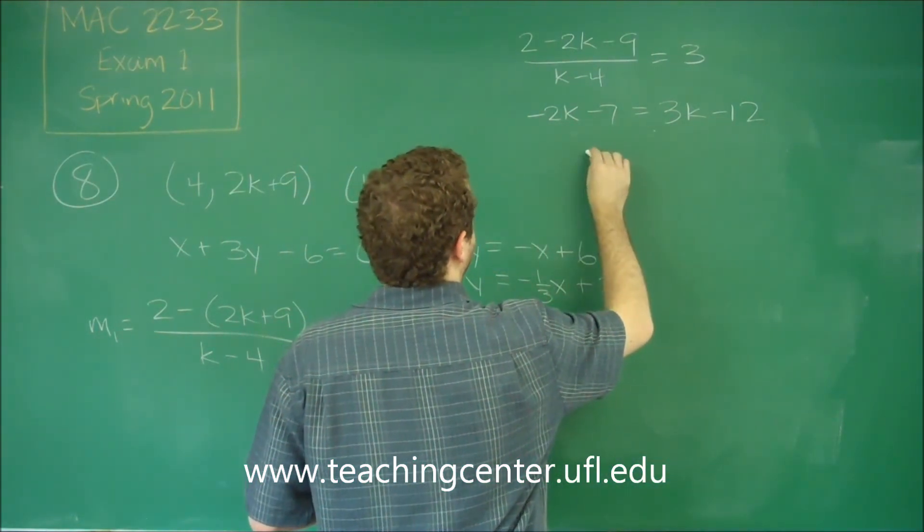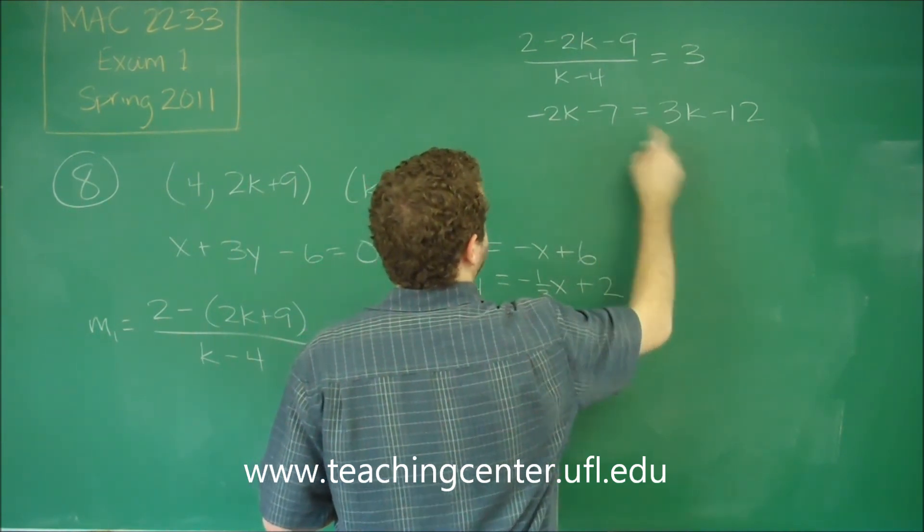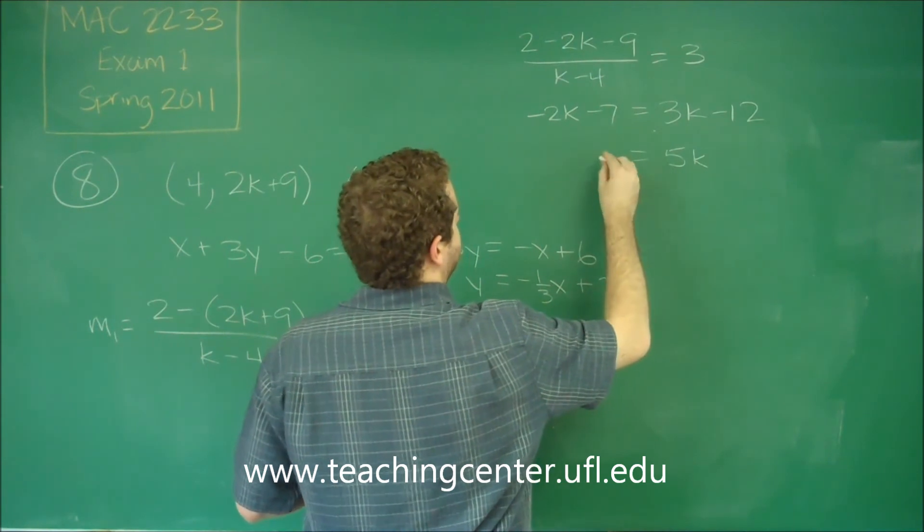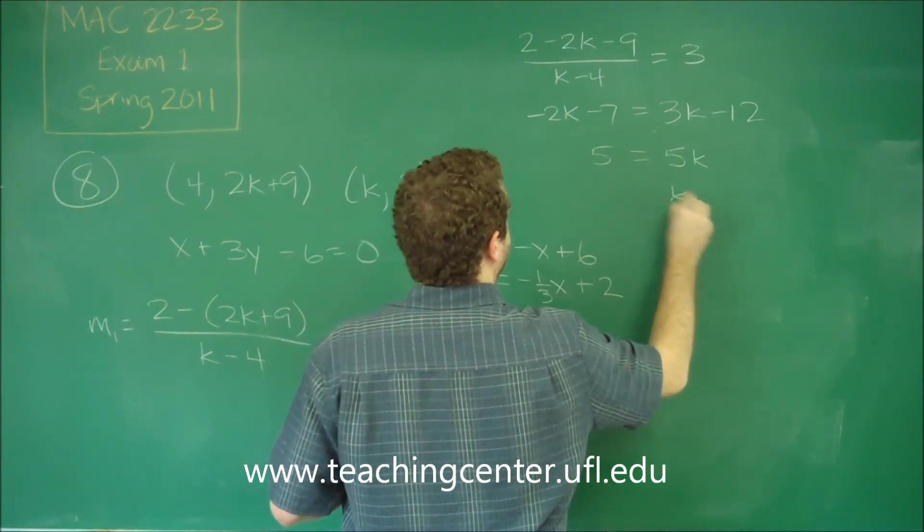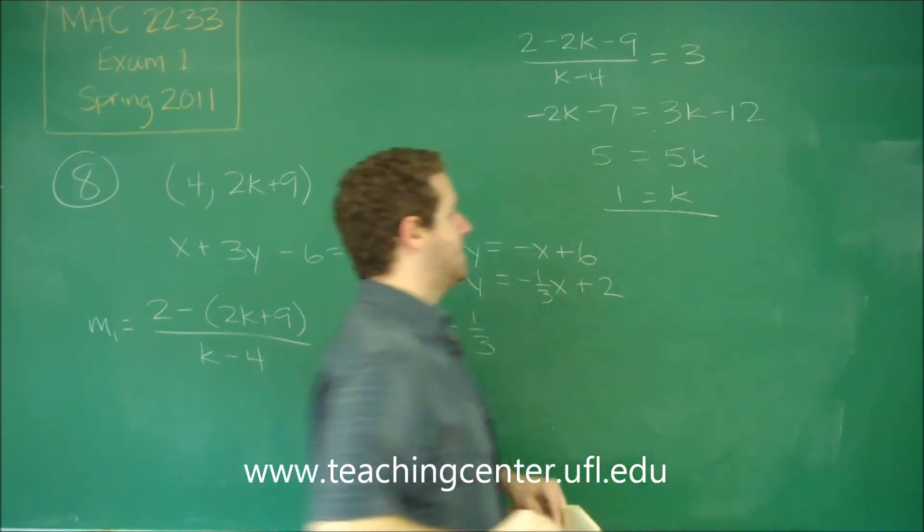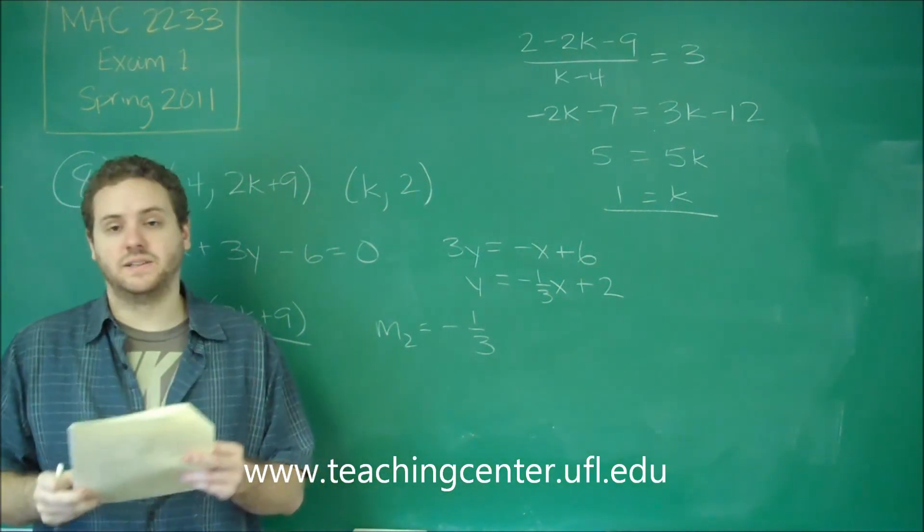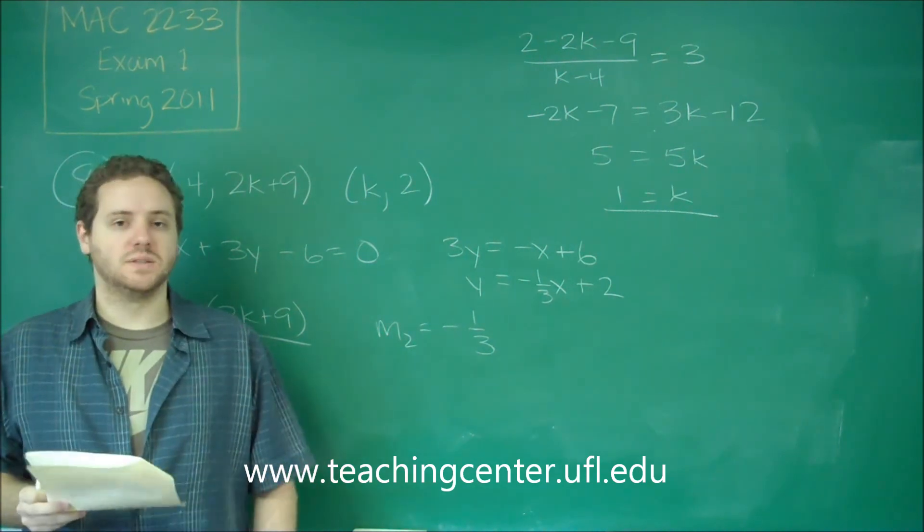If we add 2K and add 12 over, 3K + 2K is going to be 5K. -7 + 12 is going to be 5. We get that K must be 1 for these two lines to be perpendicular, which is answer choice B.